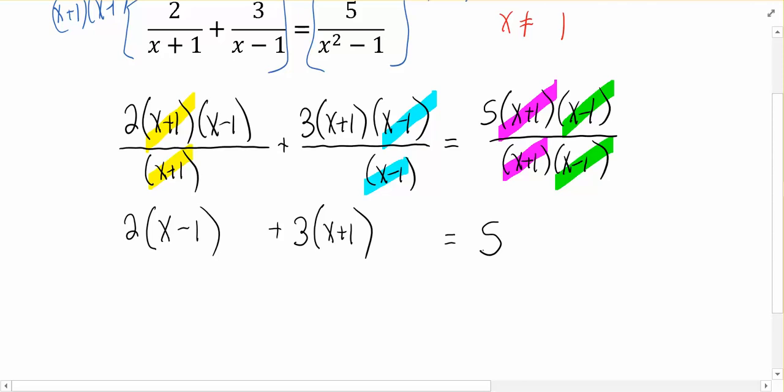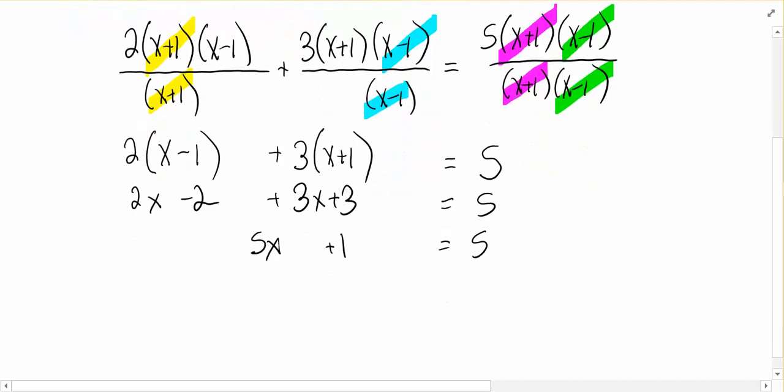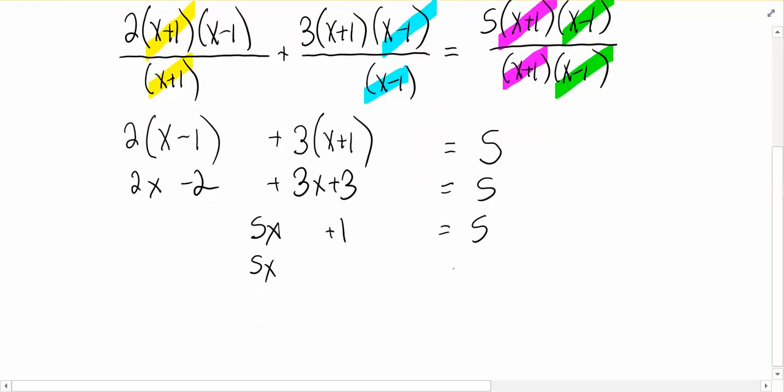And at this point, we have a pretty straightforward linear equation to solve. We're going to go ahead and distribute, distribute. We're going to combine some like terms. We're going to subtract the 1 to the other side. We're going to divide by the 5. Get 4 fifths.